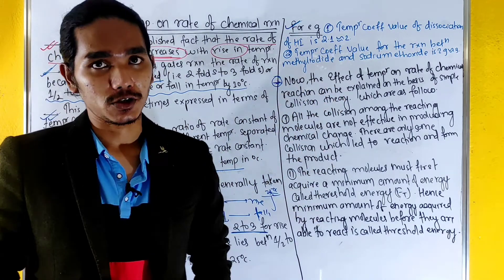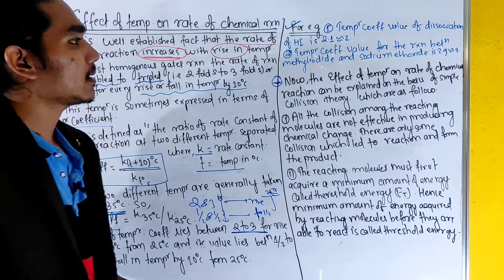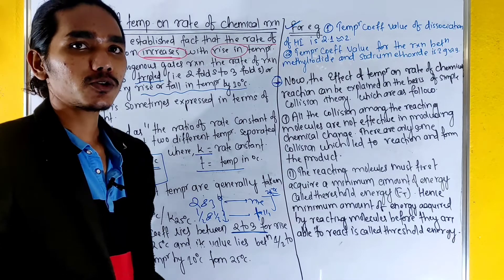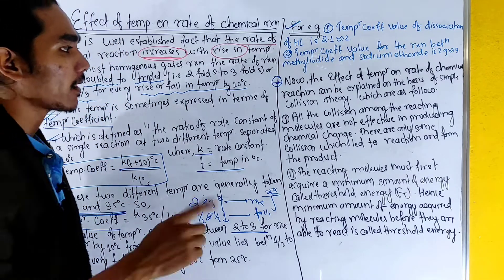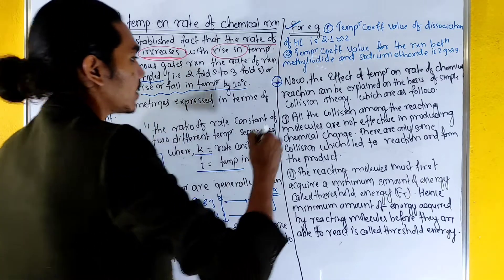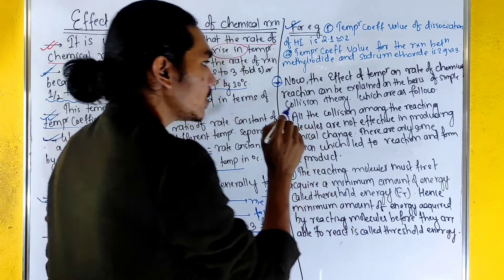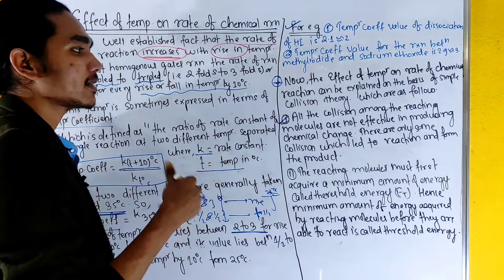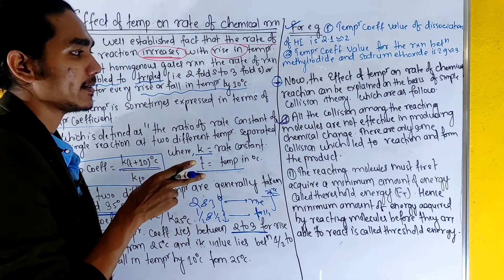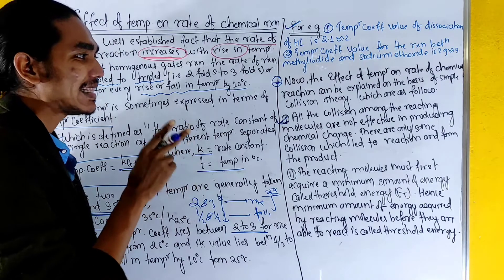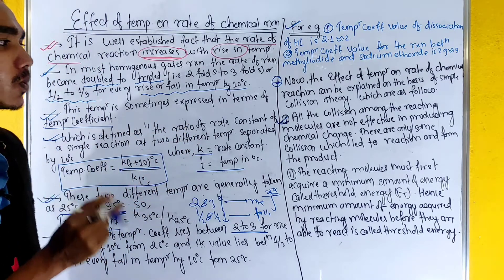This is called collision theory. Now we discuss different points one by one. Number 1: Although collisions among the reactant molecules are frequent, not all collisions are effective in producing chemical change. There are only some collisions which lead to the reaction and form the product.